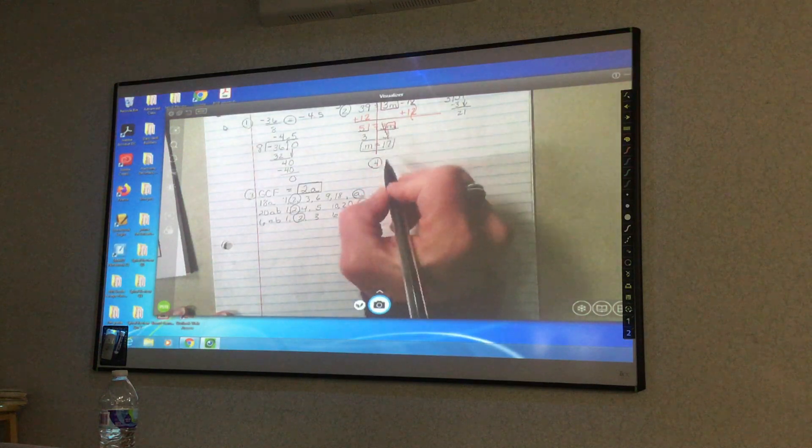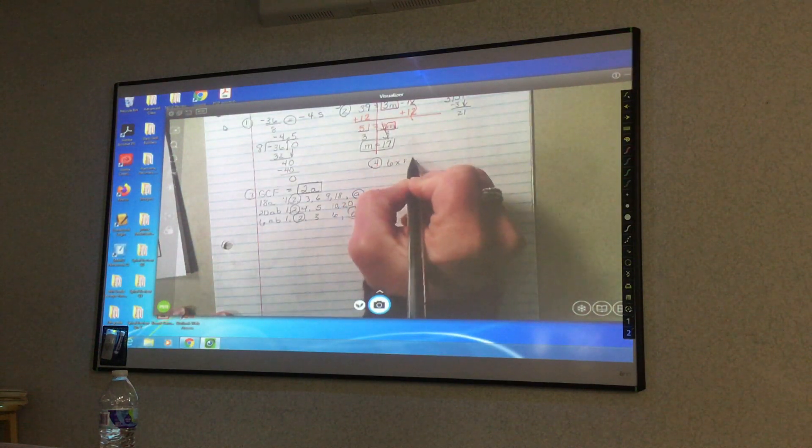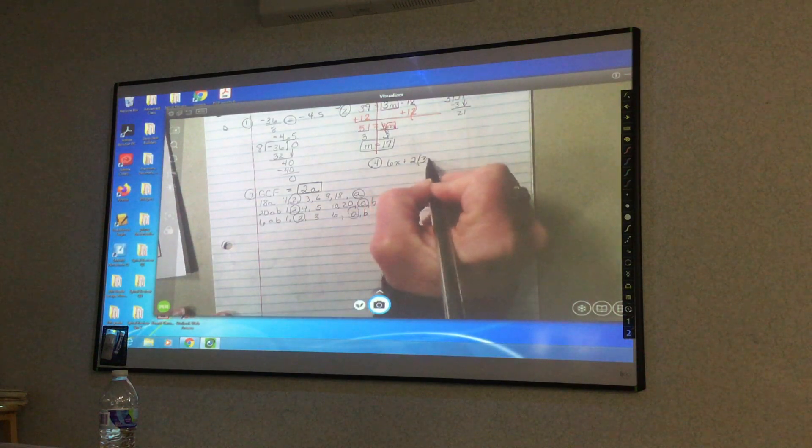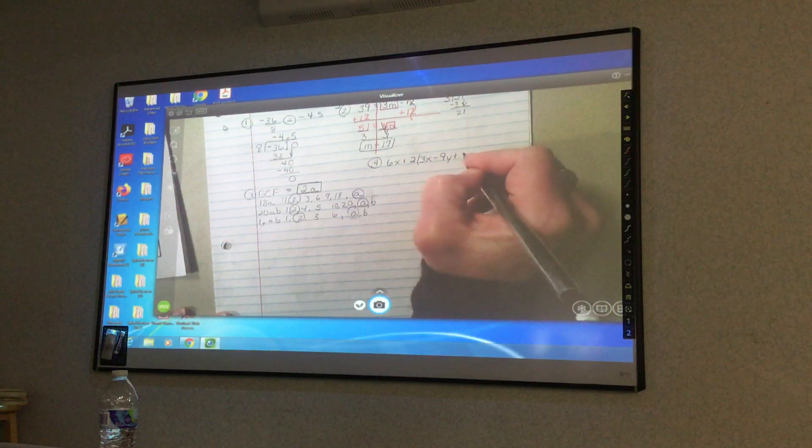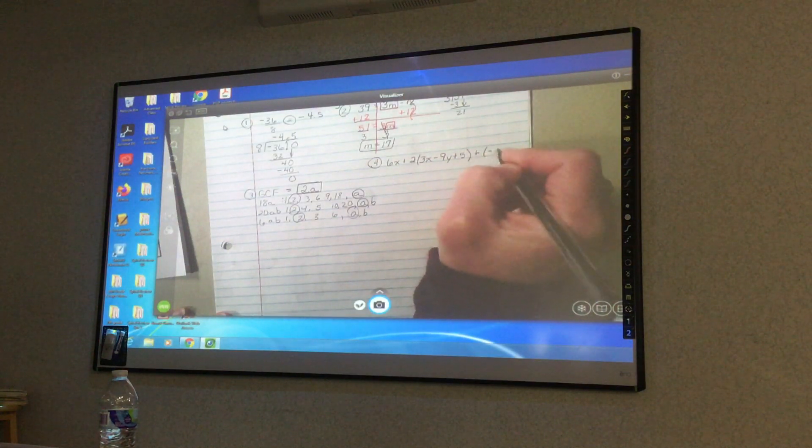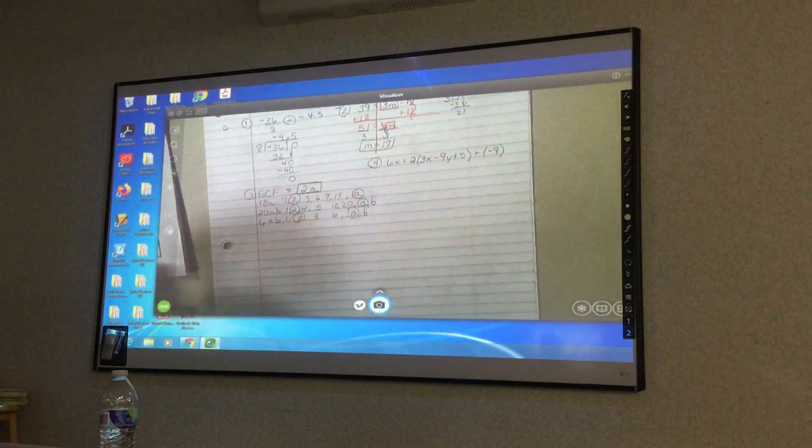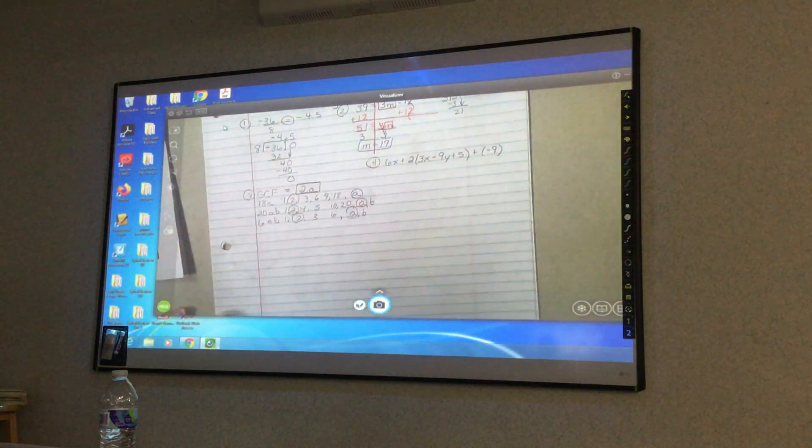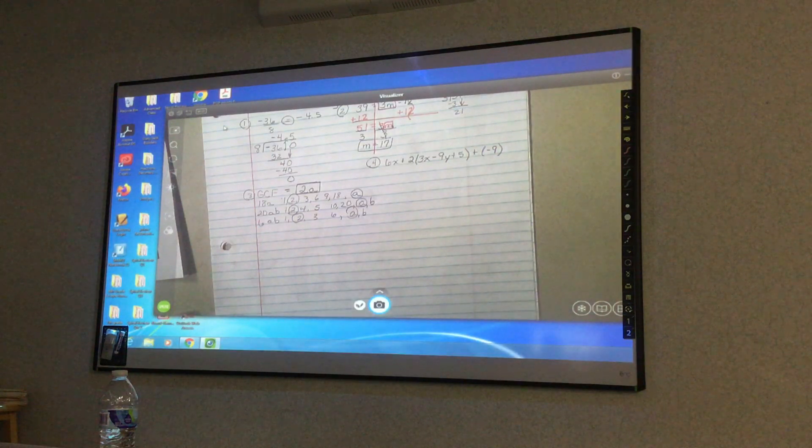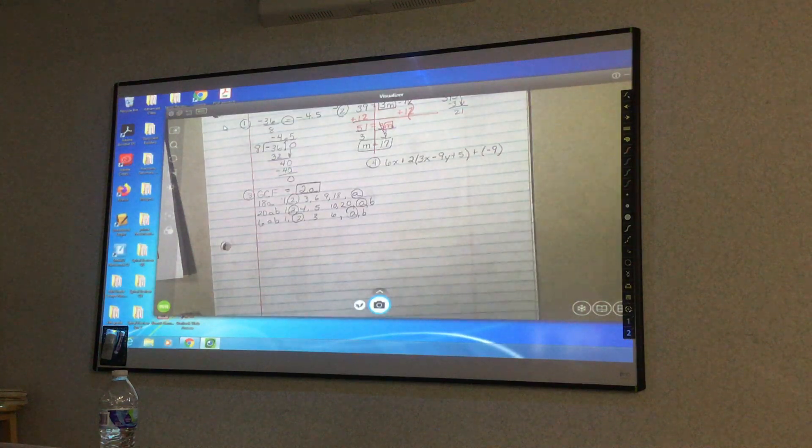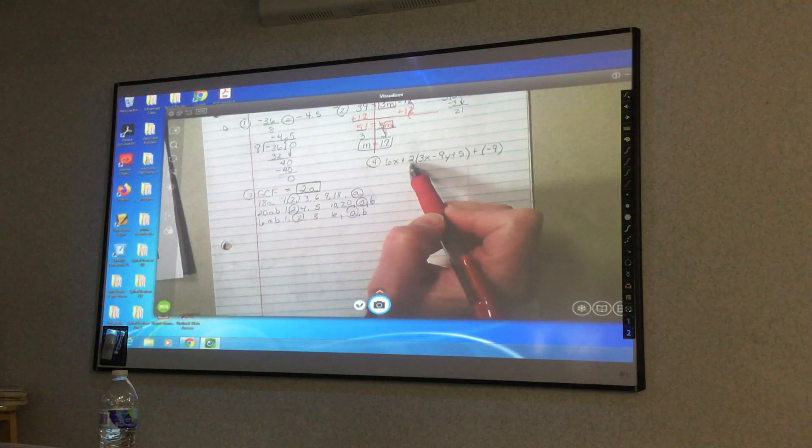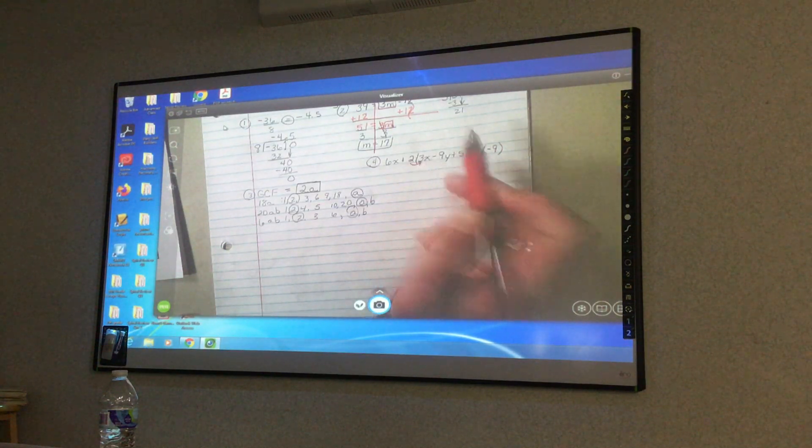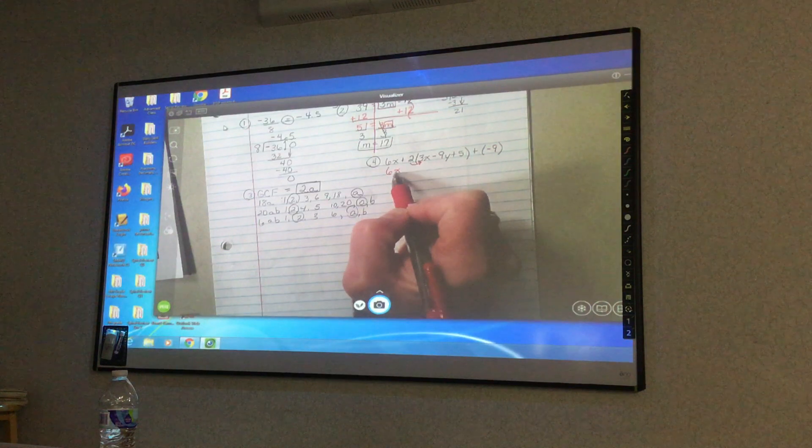Number 4. 6x plus 2 times the quantity 3x minus 9y plus 5 plus negative 9. This is a problem that is just following the order of operations. I always say please excuse my dear Aunt Sally. You guys like to do PEMDAS. It does not matter. But when you follow the order of operations, you have to do the parentheses, which is the distributive property. So just bring down the 6x.